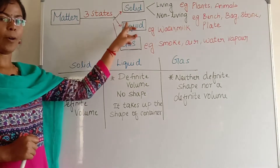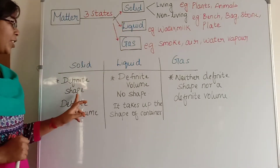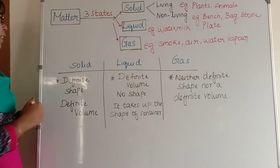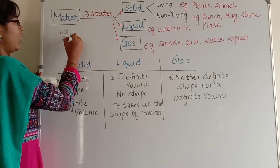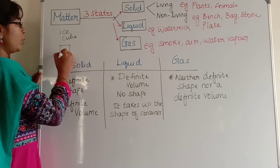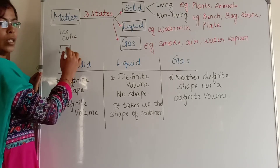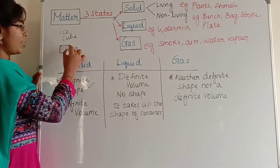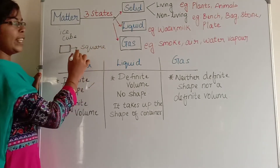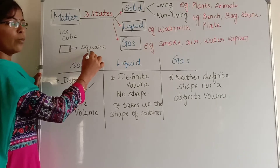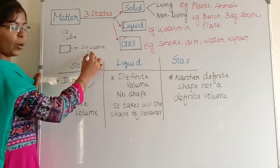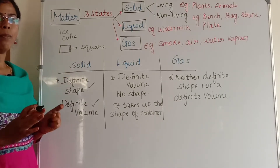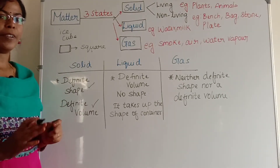A solid form should have a definite shape and it should have a definite volume. For example, an ice cube is square-shaped, so this is a solid form. It has a definite shape — it is square-shaped. We can find the volume of a square using a mathematical formula, so it has a definite volume. Every solid form has a definite shape and a definite volume.